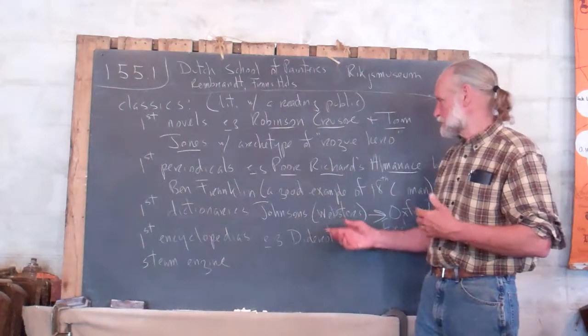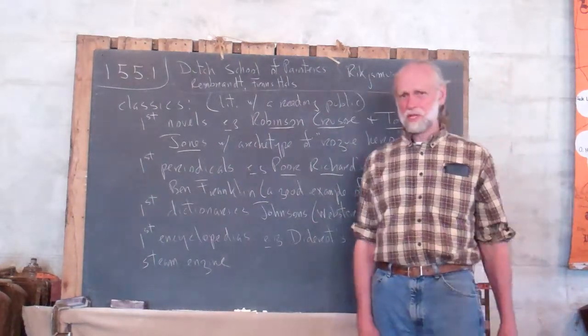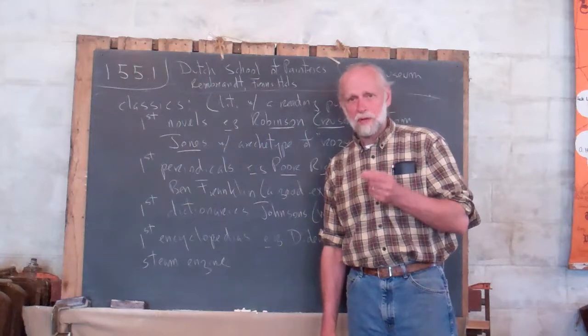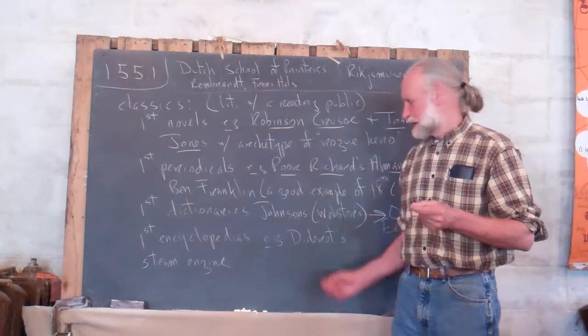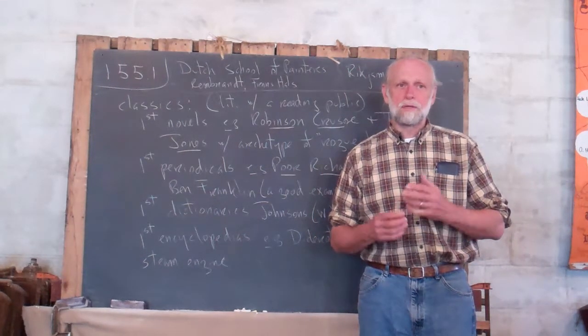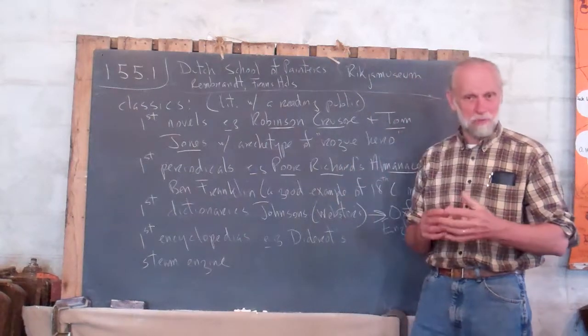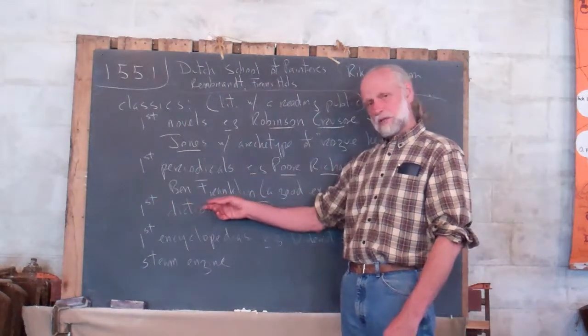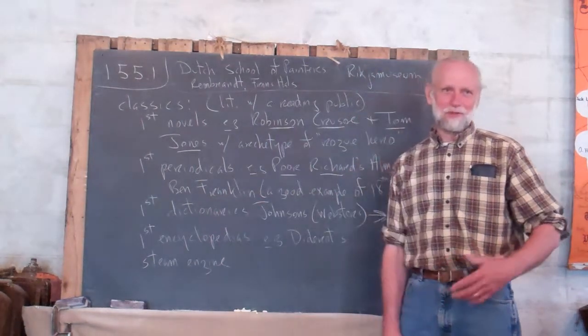But we get our first periodicals, too. By that, I mean newspapers, magazines. And an example for Americans is Poor Richard's Almanac. I don't know if anybody still reads Poor Richard's Almanac, but it was written by Ben Franklin. And Ben Franklin is the best example I can come up with of an 18th century man that people would basically know. A good example of an 18th century man. He was an inventor. His mind never ceased. He was curious. He was wanting to figure things out. He wanted the enlightenment. He was a printer. Printing had taken off. A very interesting man. One of the more interesting, I think, Americans. And first dictionary, I'm proud that Ben Franklin's also from Pennsylvania.